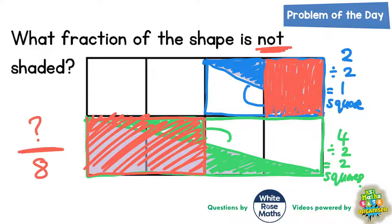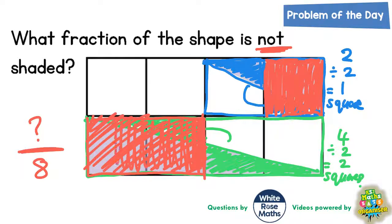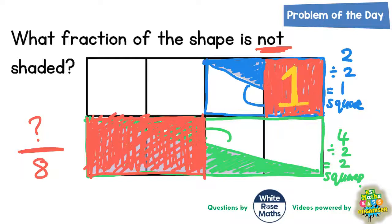What we've got is that in the top right hand corner of the shape we've got one whole square that has been shaded, and in the bottom left corner we've got two whole squares that have been shaded, which means we've got three squares which are shaded.